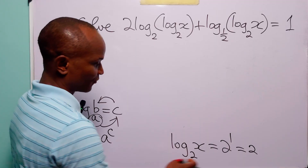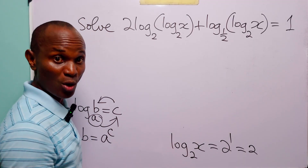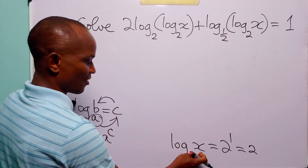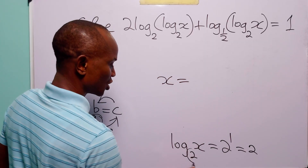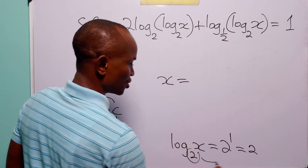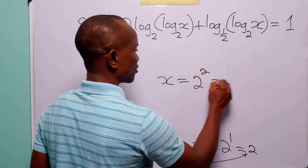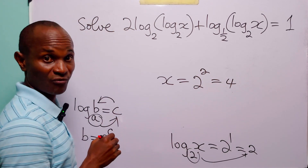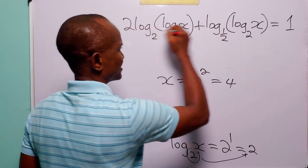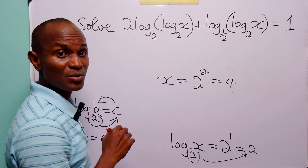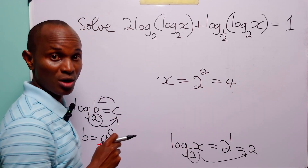And of course from here, to find the value of x, we do exactly the same thing once more. We have that x is equal to 2 to the power 2, which of course is equal to 4. So the value of x that satisfies this logarithmic equation is x equals 4.